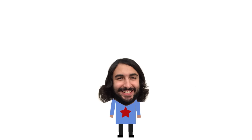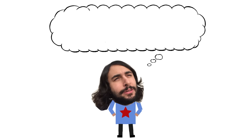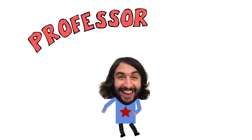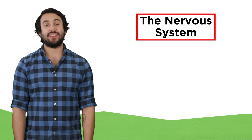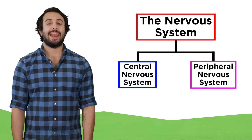Professor Dave here. Let's look at some brains. We just learned about nervous tissue, the structure of a neuron, and the divisions of the nervous system. The two main divisions are the central nervous system and the peripheral nervous system, so let's go over the first of these in more detail now.